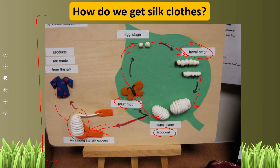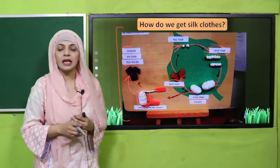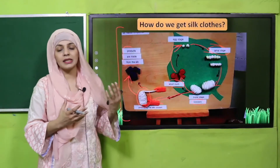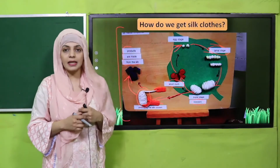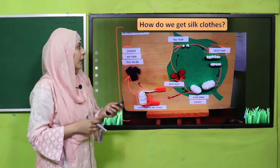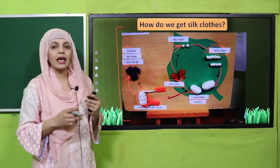Aur isse jo hai woh silk clothes jo hain woh bante hain. So products are made from silk. Is tariqe se woh silk hasil ki jati hai. Okay, toh yeh ho gaya ke ham silk ke kapde kis tariqe se hasil karte hain.